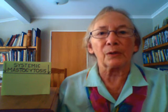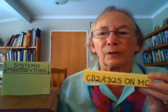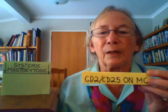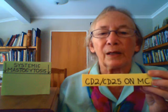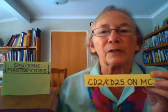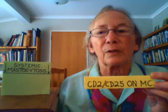Third, mast cells in bone marrow aspirate, other internal organs, or blood are found to have on their surface molecules called CD2 or CD25.